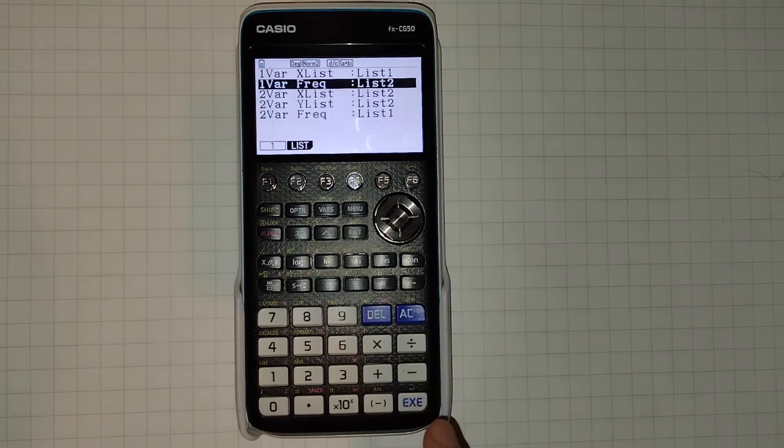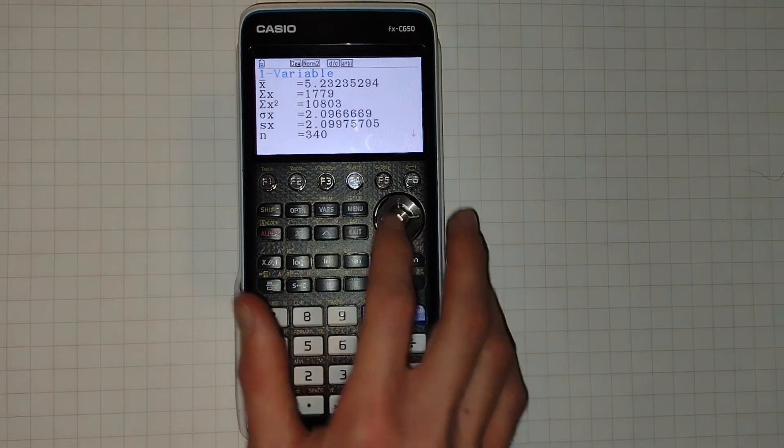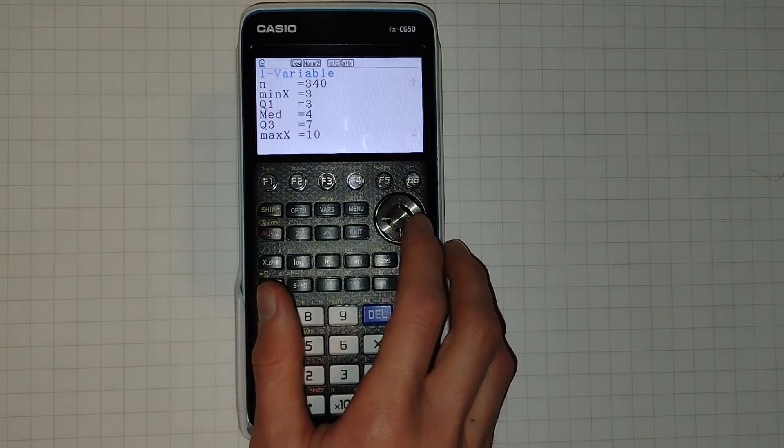But here we can click F2 and select a specific list to access our frequency. In this case, list 2. Click exit. We can then click 1 var, and here's our new calculated values using the new frequencies.